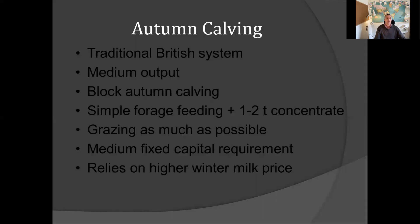The autumn calving system is a traditional British system. Like the low input, low output system, you're block calving, but you're going for a medium output, feeding up to one to two kilos of concentrate. Because you're calving in autumn and milking through the winter, you have quite a high conserved forage requirement to feed the animals through the winter period. But you graze as much as possible through the autumn and into spring to try and keep your costs low. It has a medium fixed capital requirement — it's a lot simpler than a high input, high output system — but it does require a high winter milk price to make it profitable.